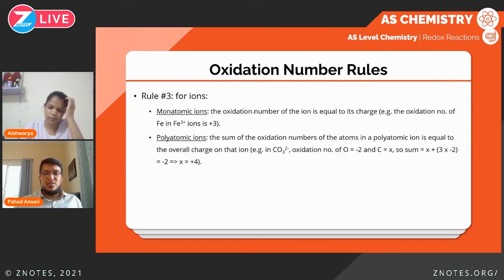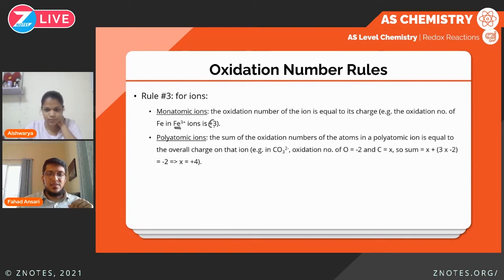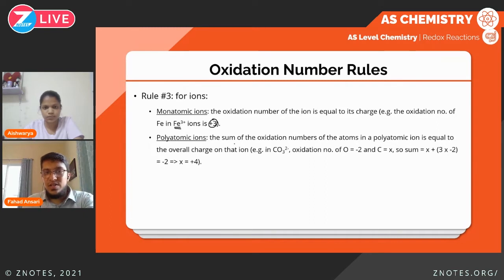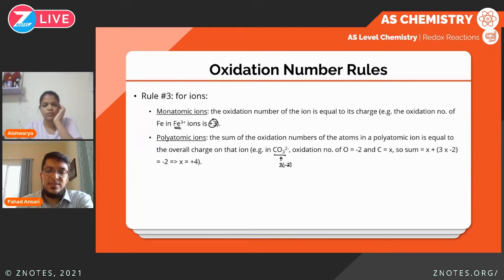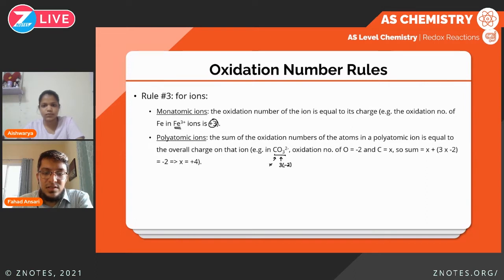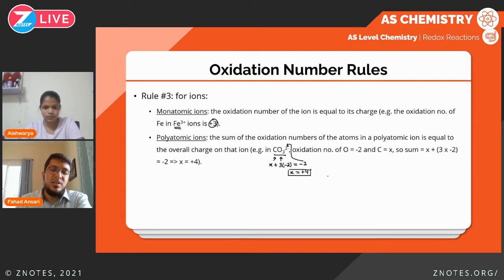For ions, the oxidation number of a simple ion equals its charge. For example, Fe³⁺ has an oxidation number of plus three. For polyatomic ions, we add up the oxidation numbers of the atoms involved to get the charge on the ion. For example, in the carbonate ion CO₃²⁻: three oxygen atoms at minus two each gives minus six, and carbon is x, so x + (3 × −2) = −2 (the charge on the ion), giving x = plus four. That is the oxidation number of carbon in the carbonate ion.